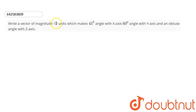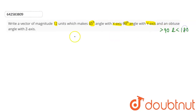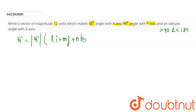Here we have to write a vector of magnitude 12 units which makes an angle of 45 degrees with the x-axis, 60 degrees with the y-axis, and an obtuse angle with the z-axis. This vector is given by the magnitude of r vector times (l î + m ĵ + n k̂), where l, m, n are the direction cosines of this vector.